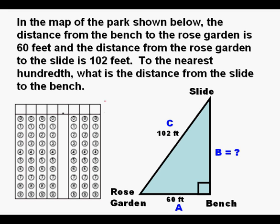In the map of the park shown below, the distance from the bench to the Rose Garden is 60 feet and the distance from the Rose Garden to the slide is 102 feet. To the nearest hundredth, what is the distance from the slide to the bench? And so we label our sides, the long side C, the short side we know A, and the short side that we don't know we label B.